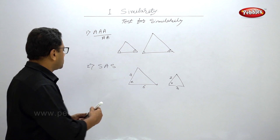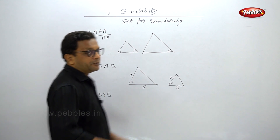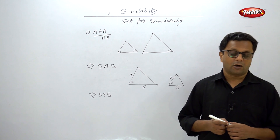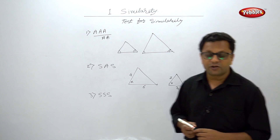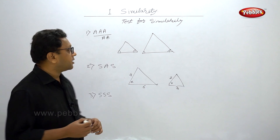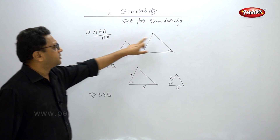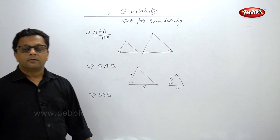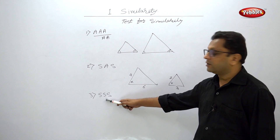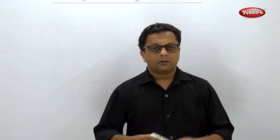The third test is the SSS test of similarity. If the corresponding sides of two triangles are in the same ratio — this side upon this side, this side upon this side, and this side upon this side all give the same ratio — then these two triangles are similar by the SSS test of similarity.